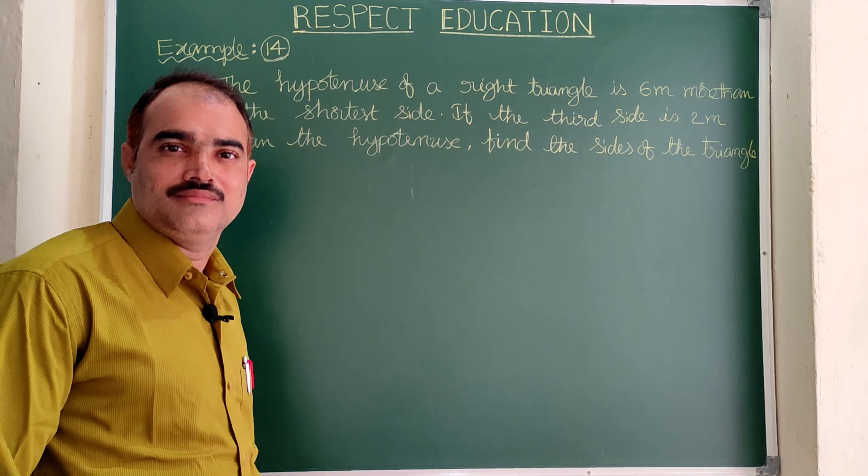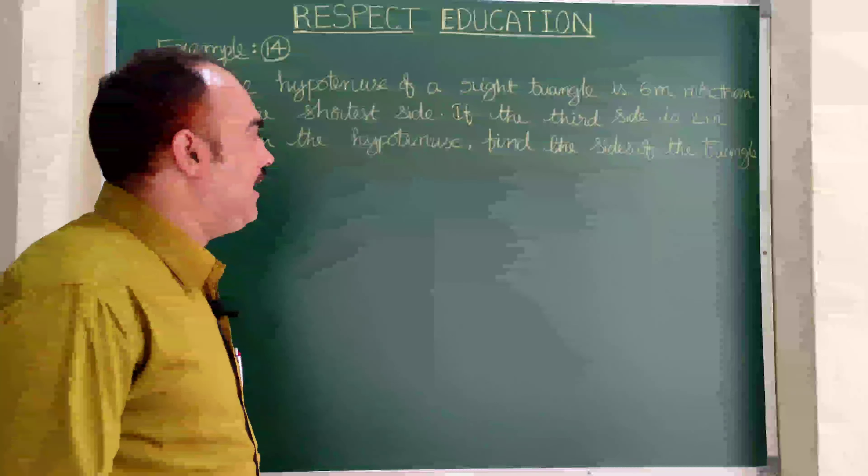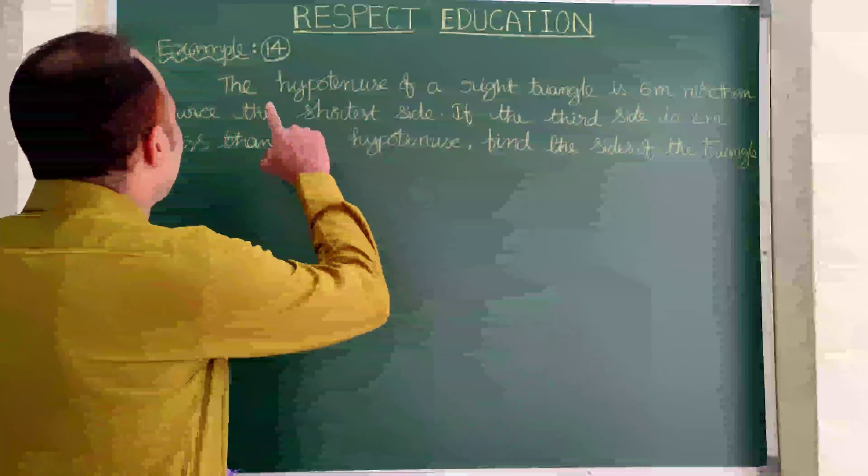Welcome back to our channel Respect Education. Now let us see Example 14: the hypotenuse of a right triangle is six meters more than twice the shortest side. If the third side is two meters less than the hypotenuse, find the sides of the triangle.